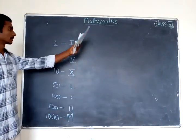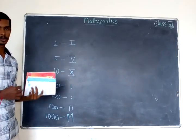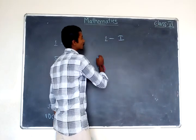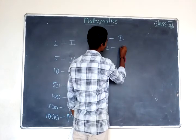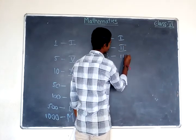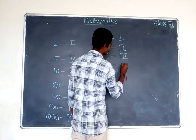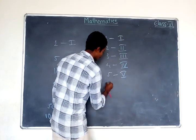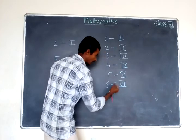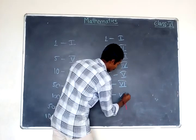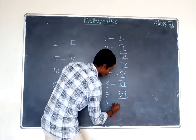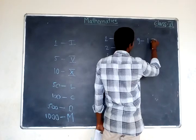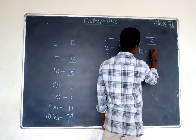Let us see how the numbers are written continuously in series — like one, two, three, four and so on. One is a single line: I. Two is II. Three is III. Four is IV — that is, I before V. Five is V. Six is VI — V and one I. Seven is VII — V and two I's. Eight is VIII — V and three I's. Nine is IX — one I before X. And ten is X.